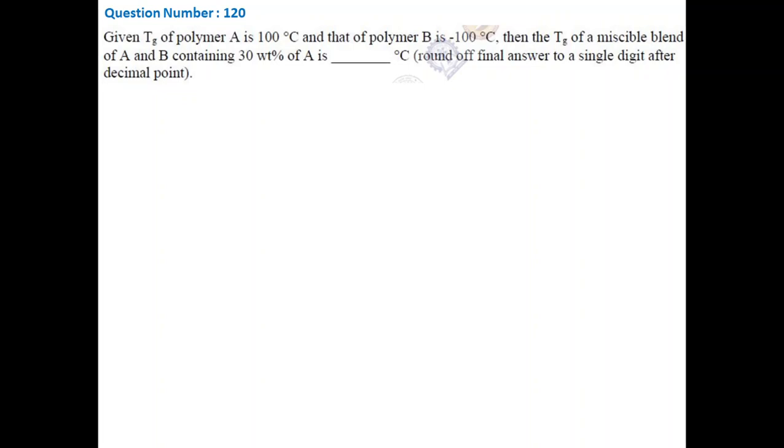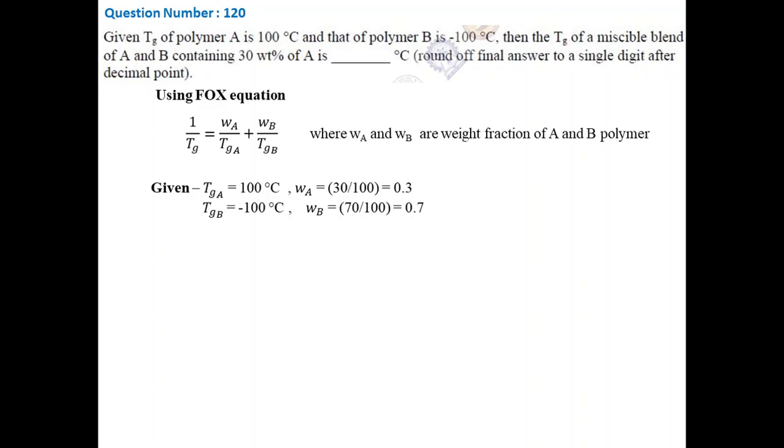As weight fraction and glass transition of both polymers are given, we can simply put this value in the equation and calculate the glass transition temperature of the blend. One thing we have to keep in mind that temperature should be in Kelvin, not in Celsius. After simplification, we find that glass transition temperature of the blend will be minus 66.84 degrees Celsius.